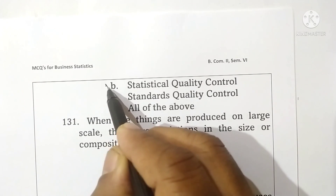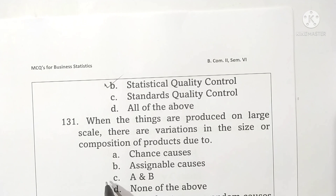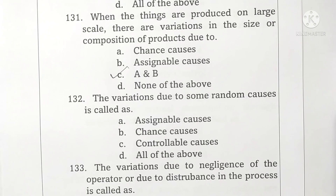Question 131: when things are produced on a large scale there are variations in the size or composition of a product due to chance causes and assignable causes. Option C is correct — both A and B are correct.